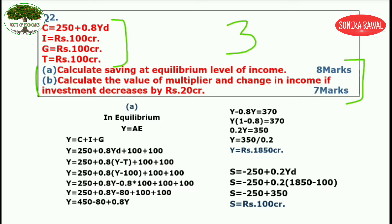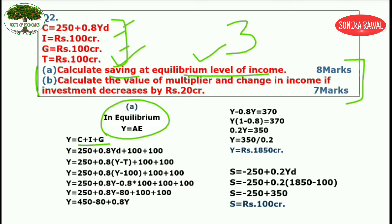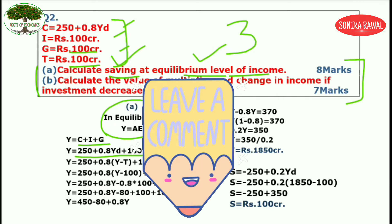Part A asks you to calculate saving at equilibrium level of income. In equilibrium, Y is equal to AE, and AE is equal to C plus I plus G. We find the equilibrium level of income first, then we can find the savings at that particular level. Notice that government expenditure is equal to taxes in this question.